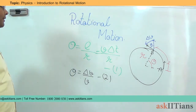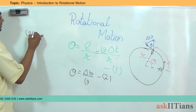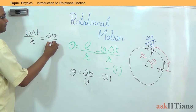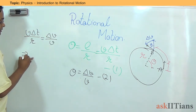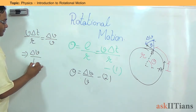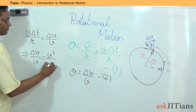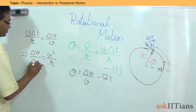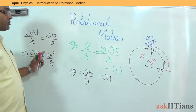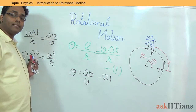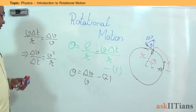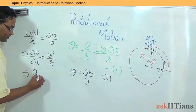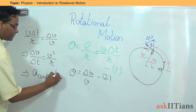Now, from equation 1 and equation 2, what will we get? We will get V·ΔT divided by R, and that is going to be given by delta V divided by V. If I just rearrange this, I will get delta V divided by delta T equals V squared by R. But what is delta V by delta T? Delta V is the change in velocity divided by the time taken. So this tells me about the acceleration. This acceleration is known as the centripetal acceleration.